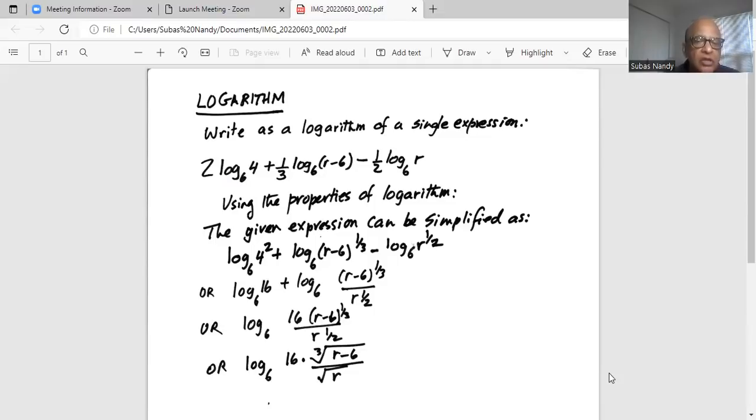So it becomes logarithm base 6 and we have r minus 6 exponent one third and minus that thing becomes divided by r to the power of half or r exponent half. Now we will again apply another rule of logarithm. The plus sign between the two terms becomes multiplication. So it becomes logarithm to the base 16.